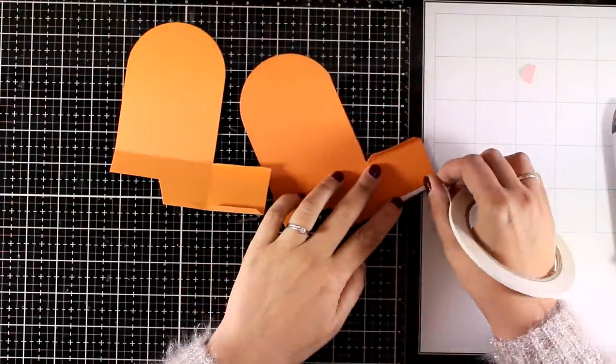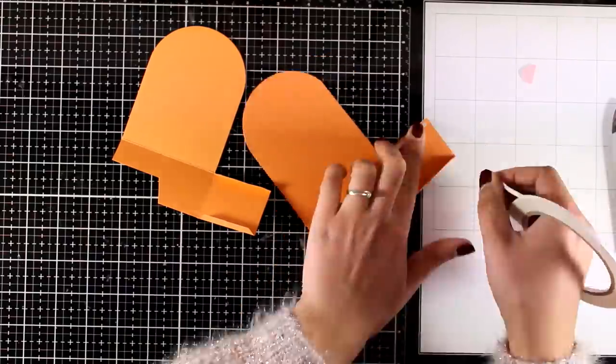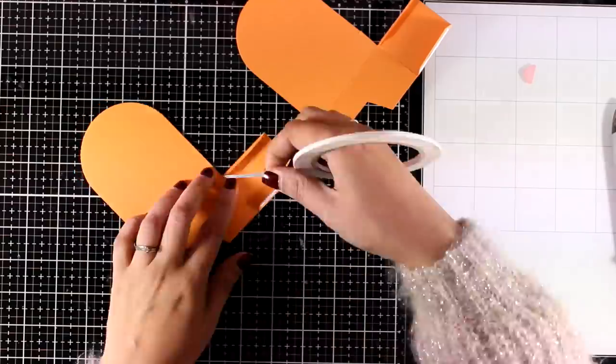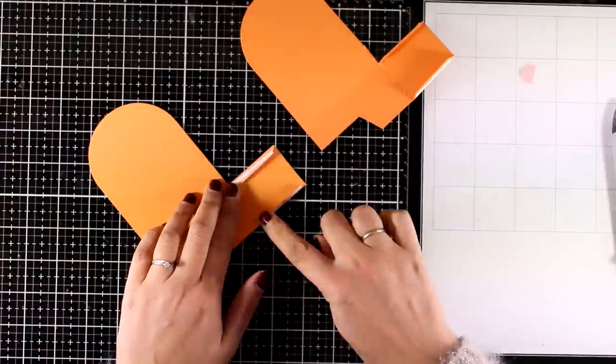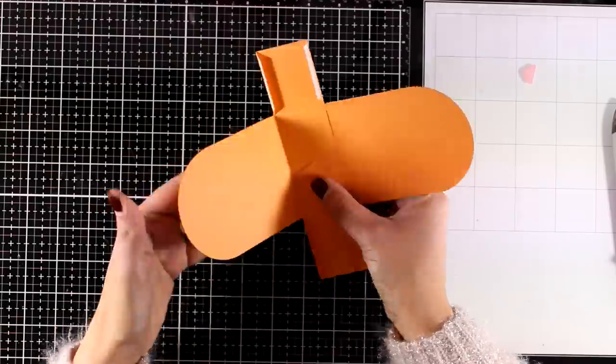All I have to do now is add some tape adhesive at the flaps. I'm doing that for both my die cuts and then I'm just going to slide them together.